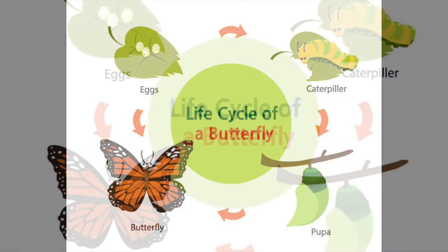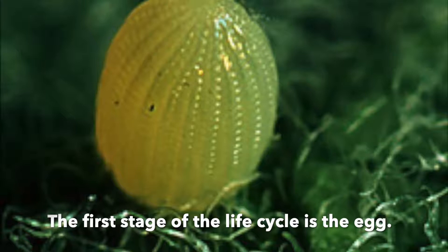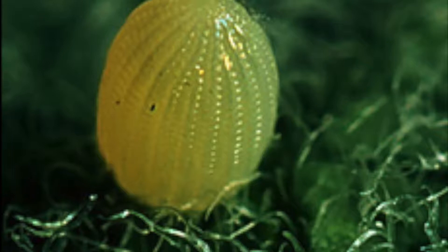Let's learn about the life cycle of a butterfly. The first stage of the life cycle is the egg that has been laid on a leaf by an adult female butterfly.